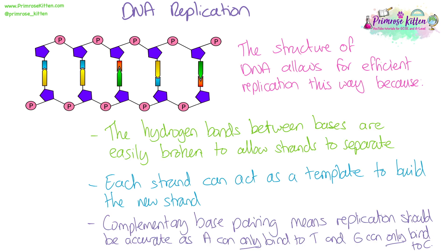This means replication should be accurate, creating perfect mirror-image copies for both template strands and keeping errors down to a minimum. There are still errors in DNA replication, but complementary base pairing helps to reduce them. We describe this structure as anti-parallel — the strands are anti-parallel to each other.